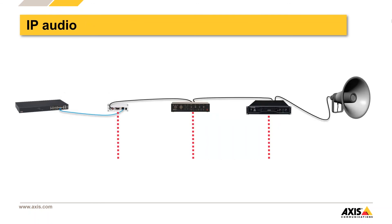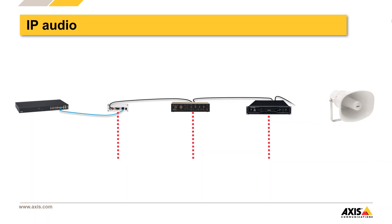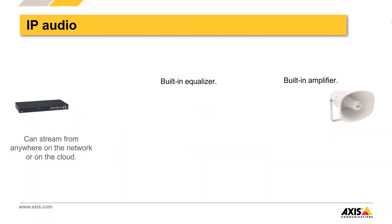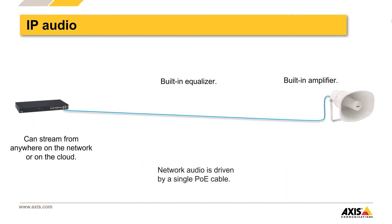Let's talk audio. This is what a typical traditional audio solution looks like — amplifiers and all kinds of other devices. With an IP solution, built into that one speaker at the end is the amplifier, equalizer, and network connection. It's all there in just one cable. So there's less wiring, less equipment, much easier to manage. It's PoE and it's an intelligent device, so that speaker can now communicate with other devices on the network.